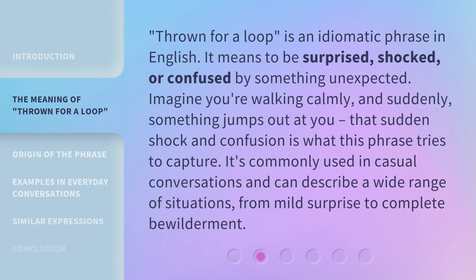Thrown for a loop is an idiomatic phrase in English. It means to be surprised, shocked, or confused by something unexpected. Imagine you're walking calmly, and suddenly something jumps out at you. That sudden shock and confusion is what this phrase tries to capture. It's commonly used in casual conversations and can describe a wide range of situations, from mild surprise to complete bewilderment.